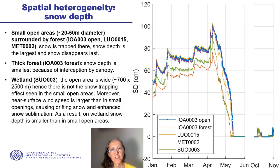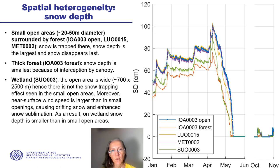This plot shows the snow depth measurements made at five different sites throughout the season. It is particularly useful to look also at the period in between SOP 1 and SOP 2, when snow disappears, to highlight the differences among the sites. The largest snow depth is observed at the small open area — the upper curves here — where snow is trapped and disappears last.